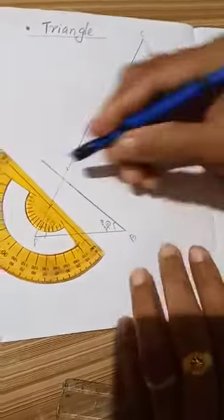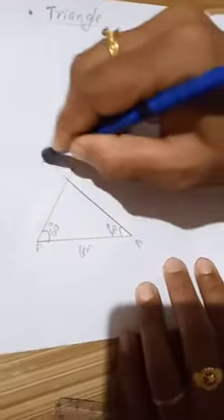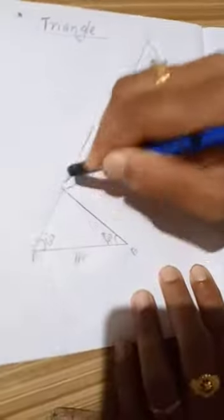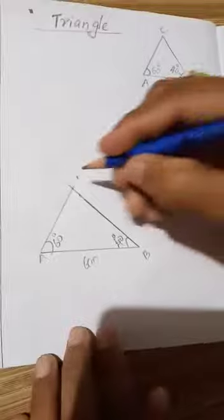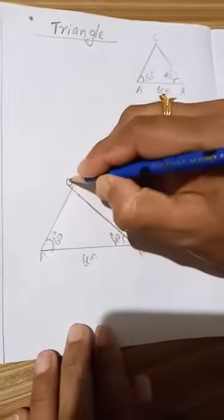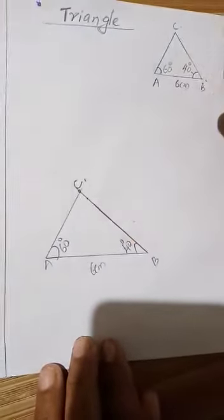What do we do now? Now we're going to complete it. This triangle is ABC.